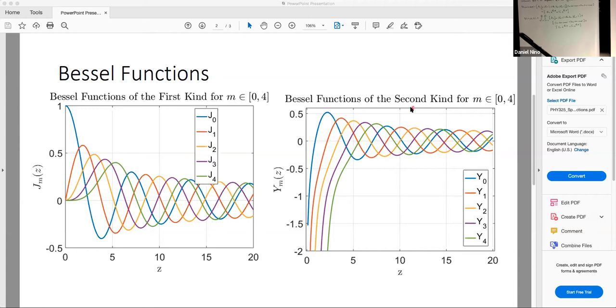In contrast, the Bessel function of the second kind diverges as z goes to 0 and goes to negative infinity. And this will be important when we consider the physical constraints of certain problems. So, for example, if the origin is included in our physical problem, then this factor can't survive. Otherwise, they will make the solution blow up.